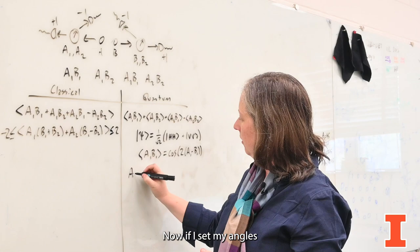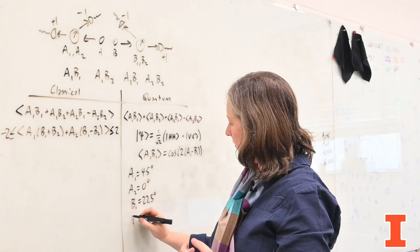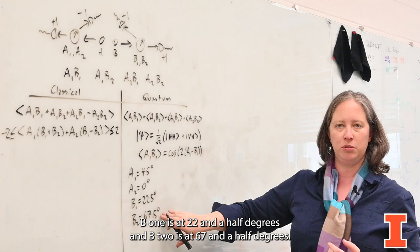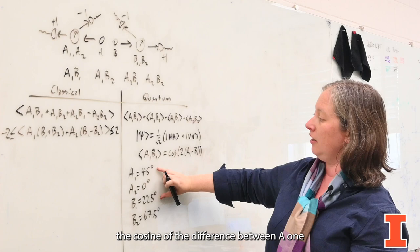Now if I set my angles cleverly, where A1 is at 45 degrees, A2 is at zero, B1 is at 22 and a half degrees, and B2 is at 67 and a half degrees, then I can write down each of these four terms.